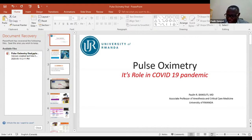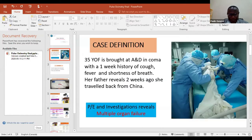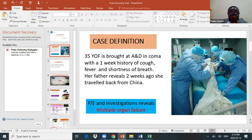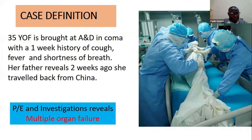Talking about pulse oximeter for COVID patients, I start with a clinical case: a 35-year-old female brought to the accident and emergency department in a coma, with a one-week history of cough, fever, and shortness of breath. Her father reveals that two weeks ago she had traveled back from China — a typical case fitting the case definition of COVID disease.